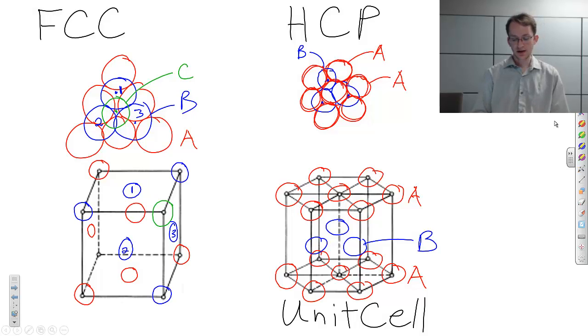Now we need to complete the unit cell, and the way to complete that is with another C atom at the opposite corner. So this is the C plane, this is the B plane, and this is the A plane.